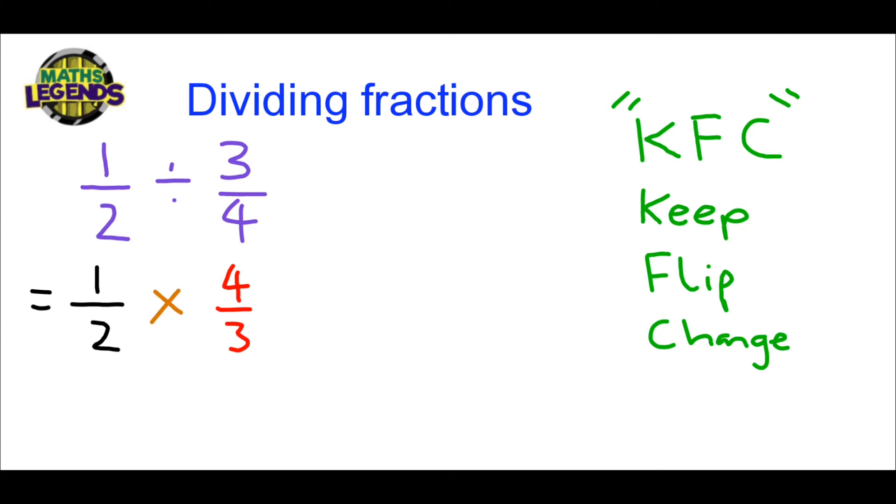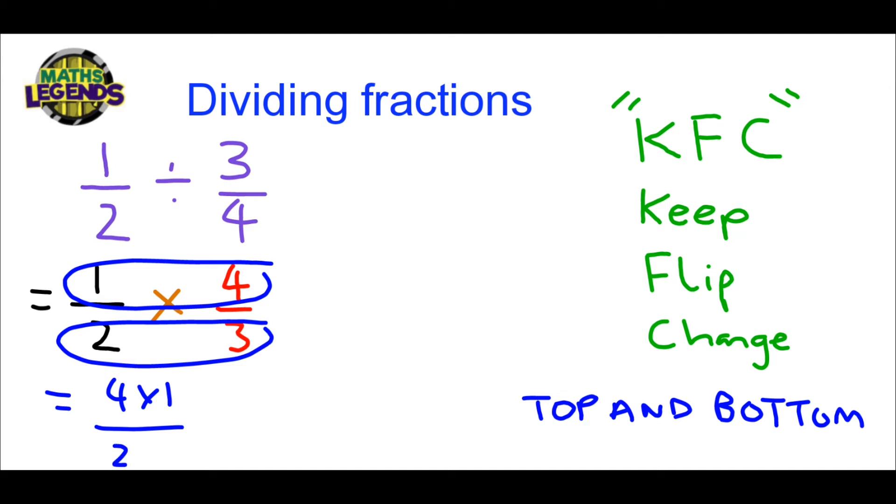This is now solved as a multiplication fraction question. So we use our rule of top and bottom. So we multiply the top, gives us 4 times 1, over the bottom, which is 2 times 3, which simplifies to 4 over 6. We can then divide top by 2, and the bottom by 2, to give us the simple form of 2 over 3. Let's have a look at another example.